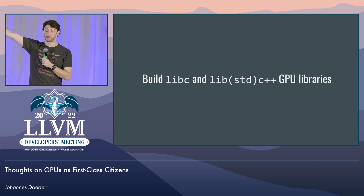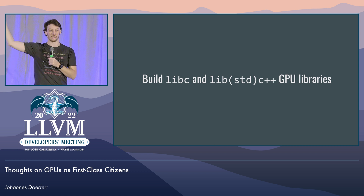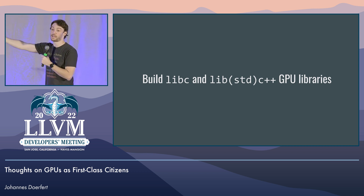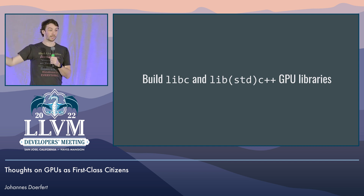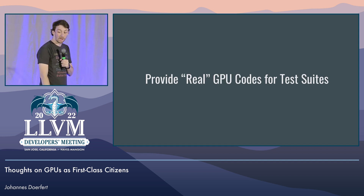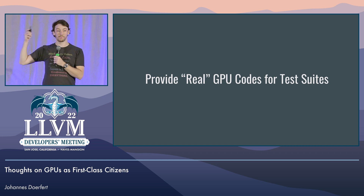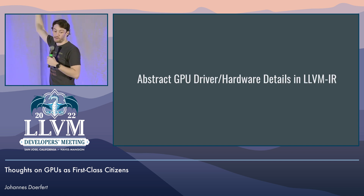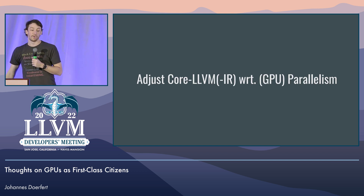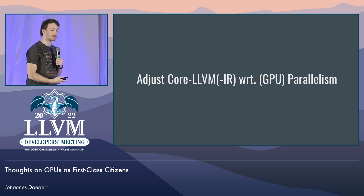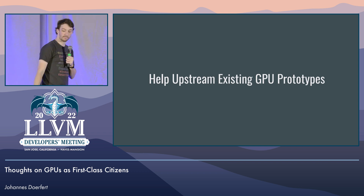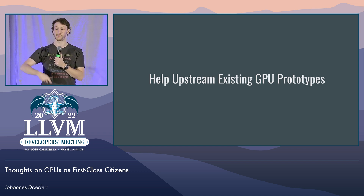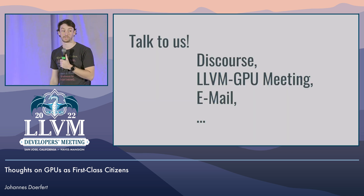We're now starting to build libc for GPUs, and then thinking about libstdc++ and libc++. These are big steps into the future. We want real codes for GPU testing, performance tracking, and compile-time tracking. We want abstraction/extraction layers, and we want to look into LLVM IR with regards to parallelism. We have a lot of prototypes that need to get in, including libm and so on. Just talk to us. Thank you.